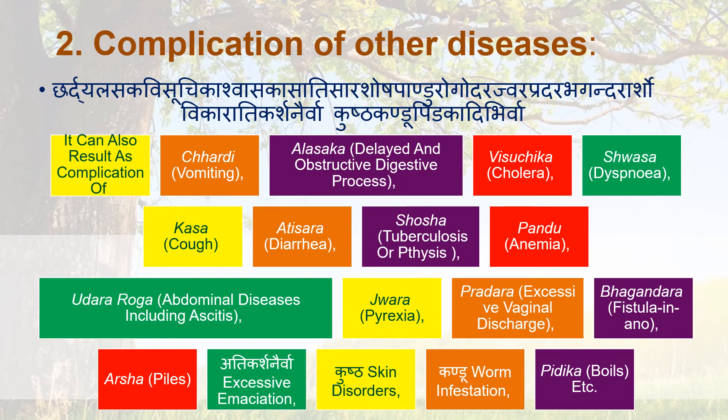Second, as a complication of other diseases such as Chardi (vomiting), Alasaka, Vishuchika, Shwasa, Kasa, Atisara, Shosha, Pandu, Udara, Jwara, Pratishtambha, Bhagandara, Arshas, Kushtha, Kandu, Pidaka, etc.